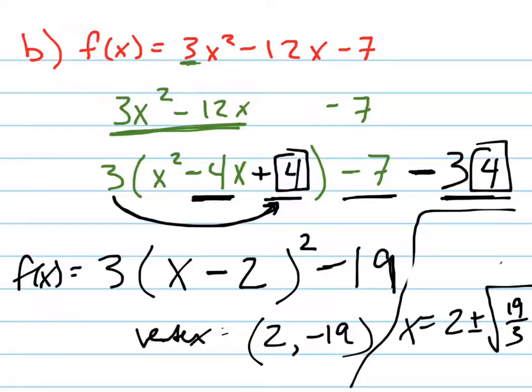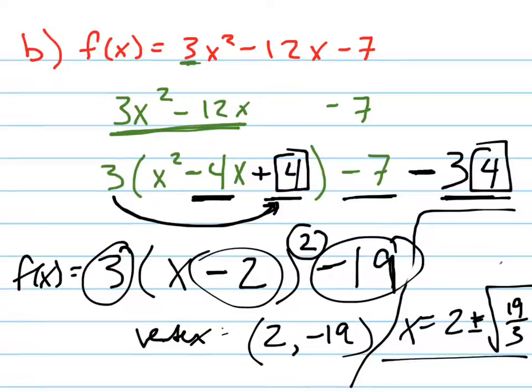You can even do all of that in your head when you get used to it. Because in my head, I'm just thinking to myself, move that to the left by adding 19. Divide by 3, so I've got 19 over 3. Take the square root, which is a plus or minus square root of 19 over 3, and then add 2. You can do it all right in your head the more you do this.